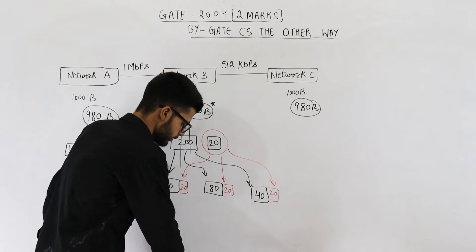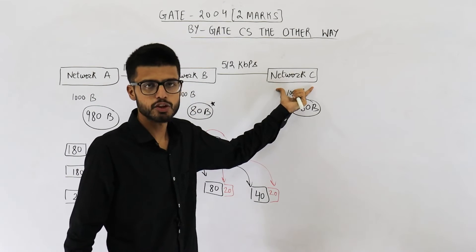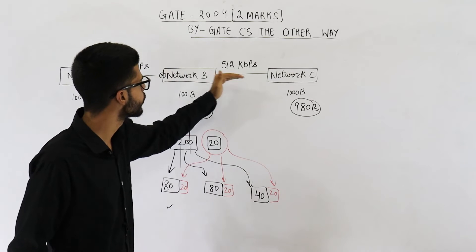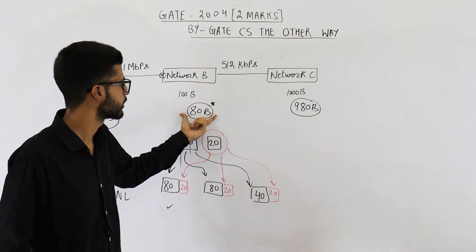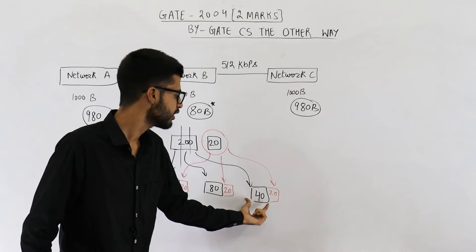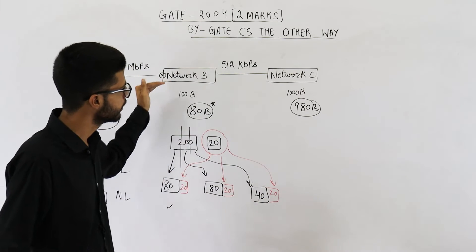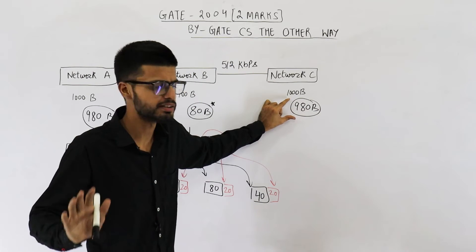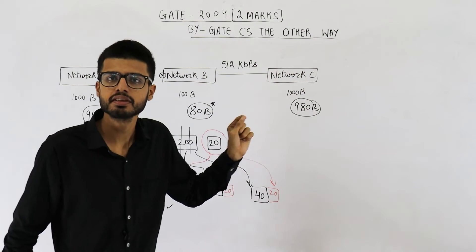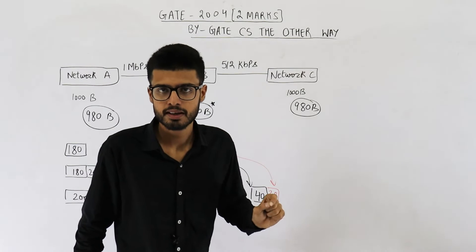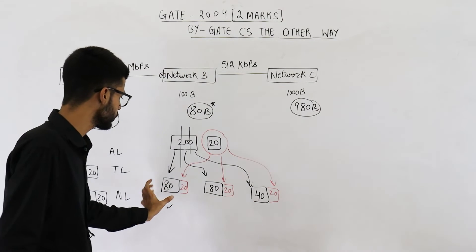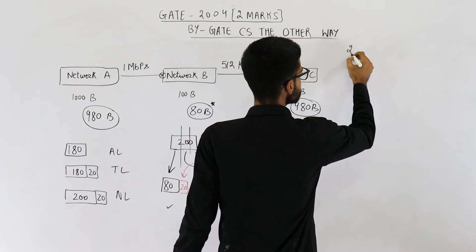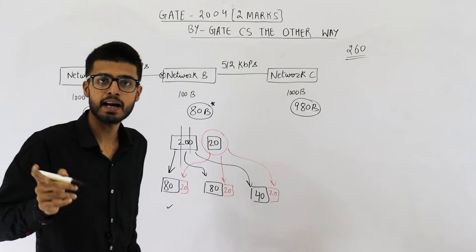The question was asking how many bytes will be received at the destination. These new IP packets — fragment 1 with 80 bytes data, fragment 2 with 80 bytes data, and fragment 3 with 40 bytes data — can happily go across network B because the data is within the 80 byte limit. All three fragments then reach network C, where the limit is 980 bytes, so they can reach the receiver. Including their 20 byte IP headers each: 100 + 100 + 60 = 260 bytes total received at the IP layer at destination.